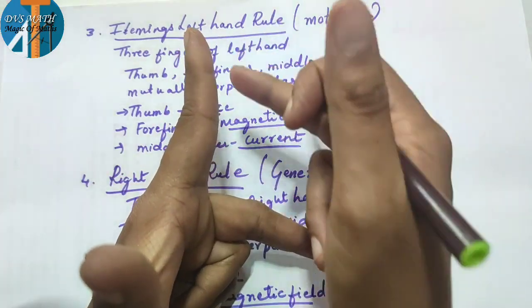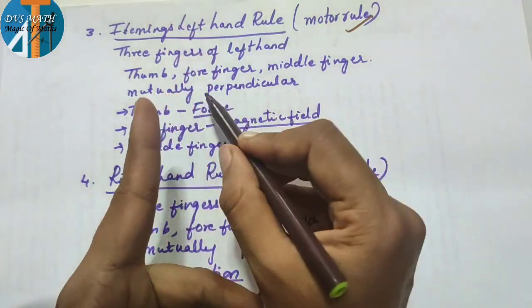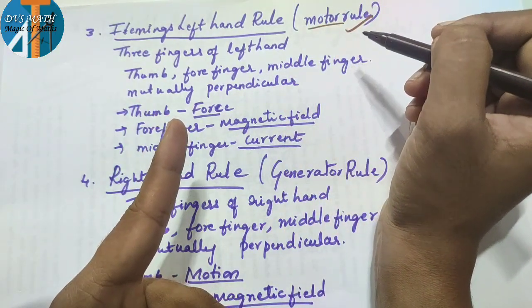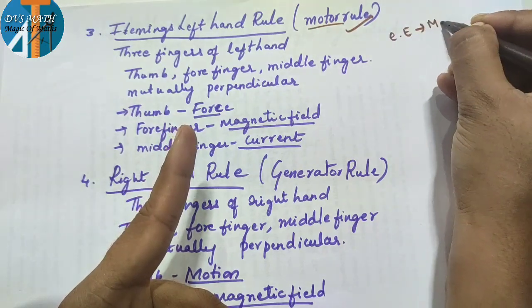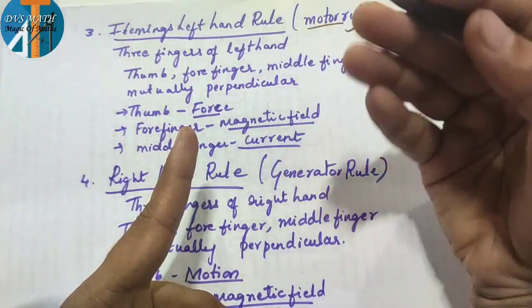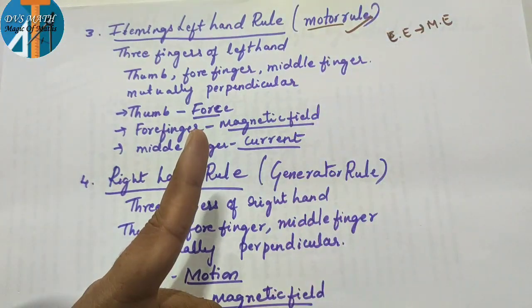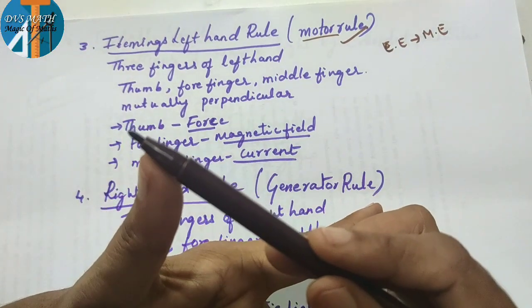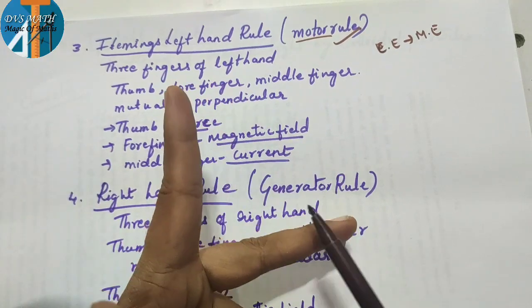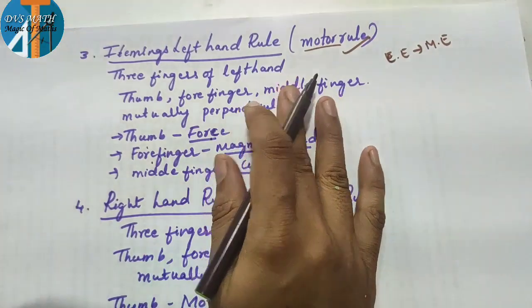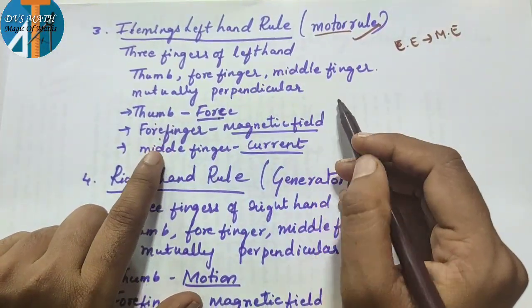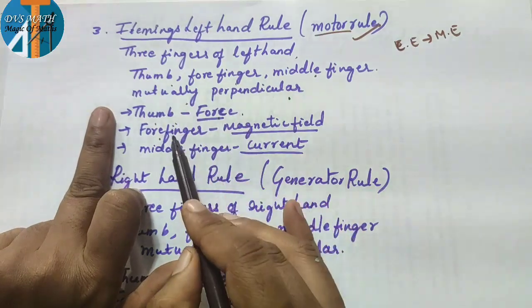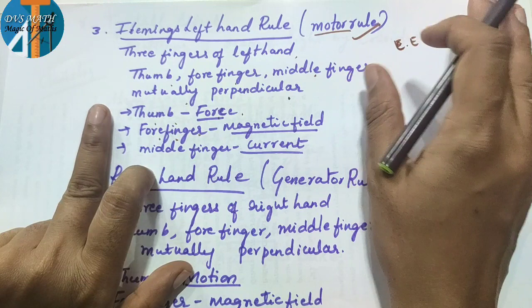In Fleming's left-hand rule: thumb indicates force, forefinger indicates magnetic field, and middle finger indicates current. So — thumb: force; forefinger: magnetic field; middle finger: current.